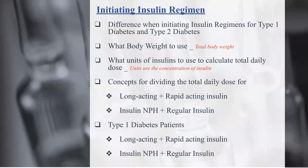Moving on, we need to know how to initiate insulin regimens. When initiating, we have two types of diabetes patients: type 1 and type 2. You need to read the question to find out which type of patient you're working with. The initiating insulin doses for type 1 diabetes are a higher dose compared to type 2, which starts gradually and titrates up depending on the patient's A1C goal. We need the body weight because units are in units per kilogram per day, using total body weight (TBW).